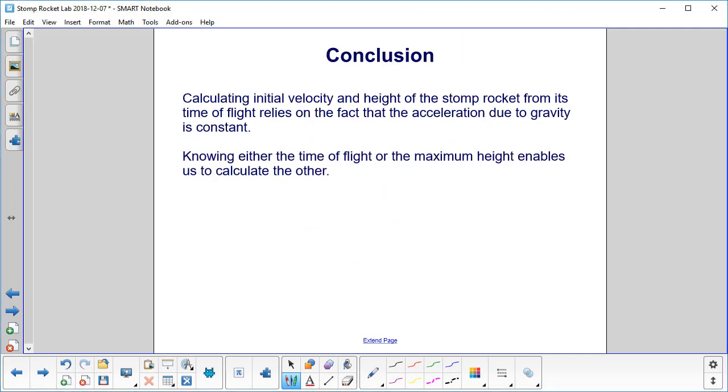We were able to find the initial velocity and the height of the stomp rocket by just measuring the time it took to go up and then come back down, due to the fact that the acceleration due to gravity near the surface of the Earth, which is where we are, is constant. And knowing either the time of flight or the maximum height enables us to calculate the other variable.